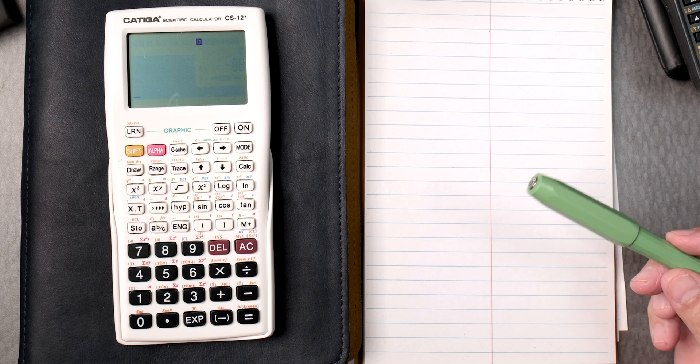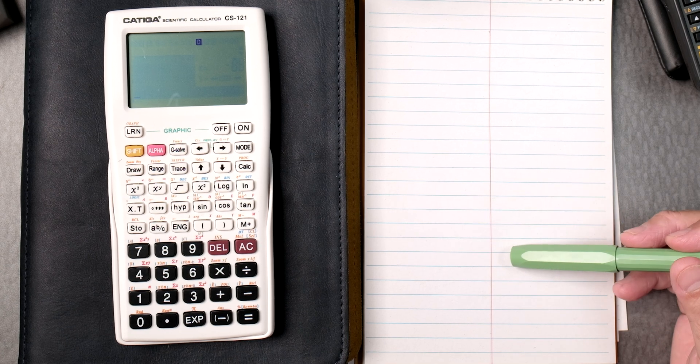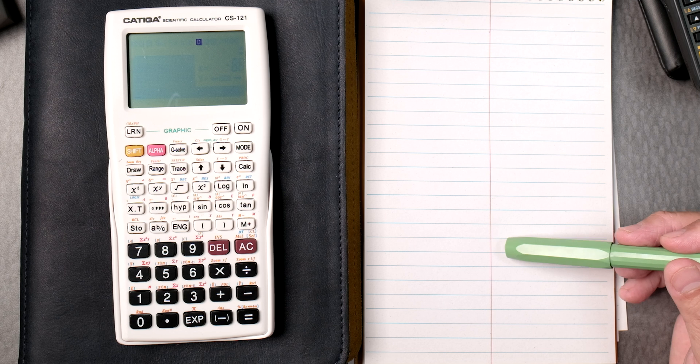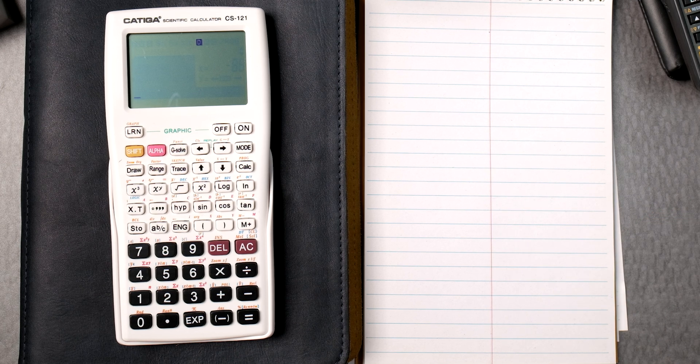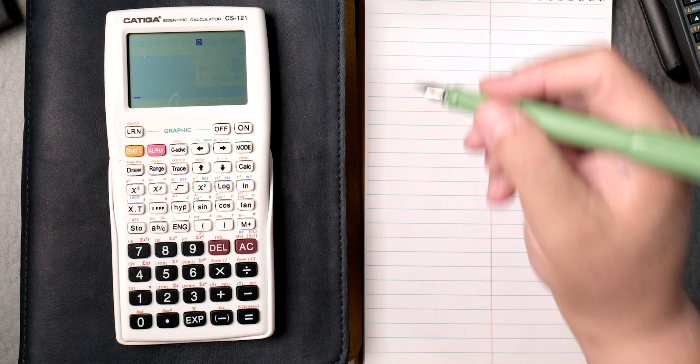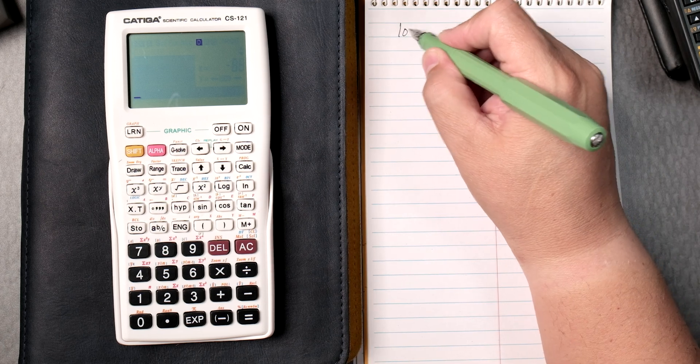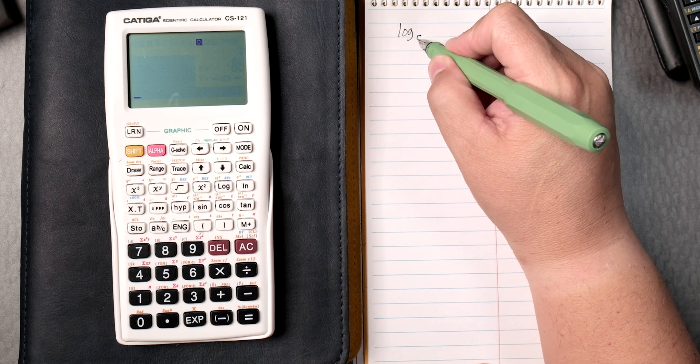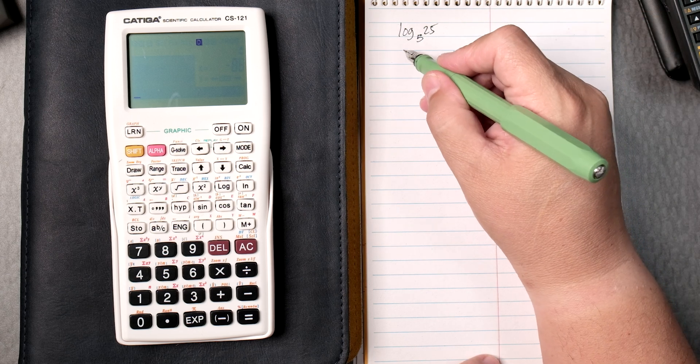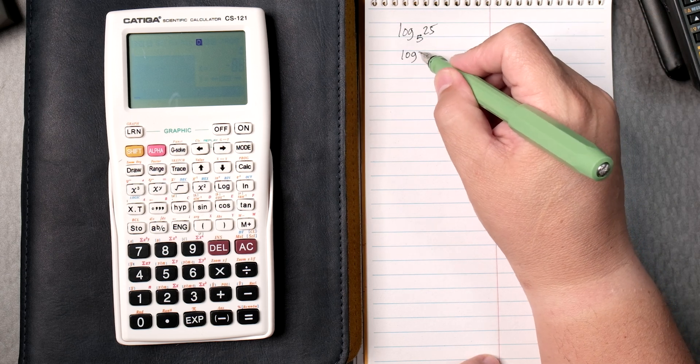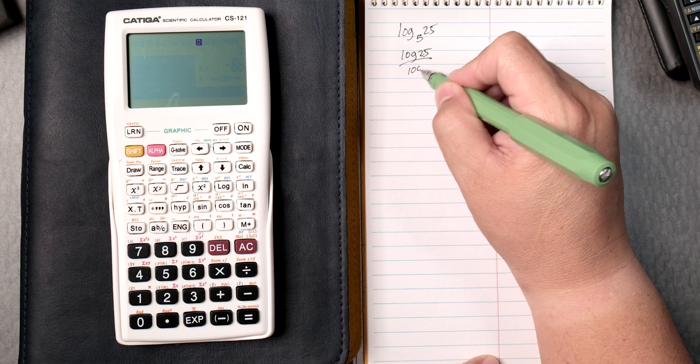This video is about the Catiga CS 121 on logs. Let's start with something like the log of base 5 of 25. There's a rule that says you can go log of 25 divided by the log of 5.